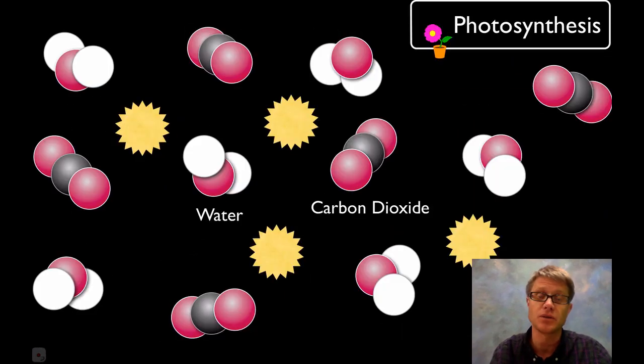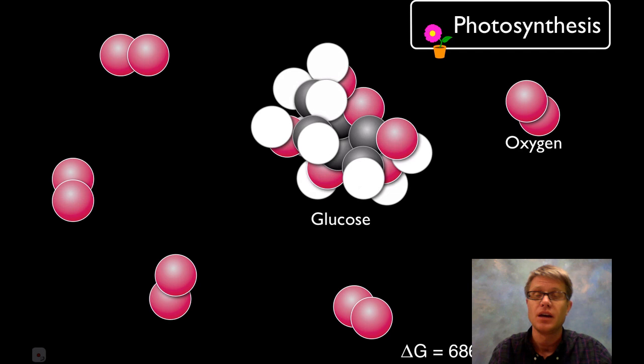If we look at the next one, this is photosynthesis which, even though chemically it's not the exact same steps, it's doing the opposite. We're going from carbon dioxide and water with energy of light, and now we're making glucose. The delta G is now a positive value. That's an endergonic reaction. It requires energy.